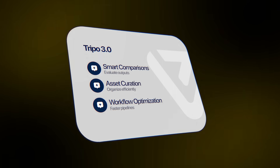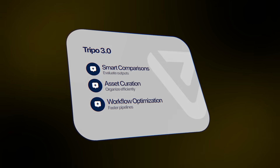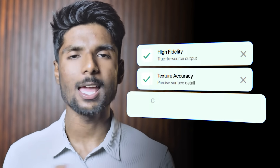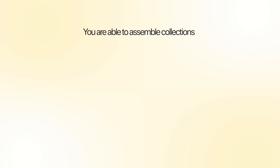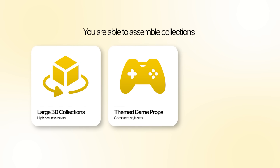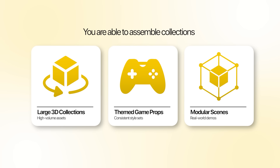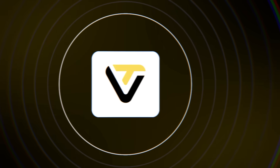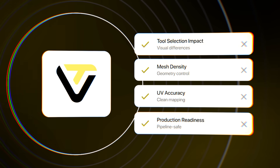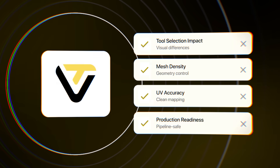Trypo version 3.0 also offers strong opportunities for comparisons, asset curation, and workflow optimization for creators focused on reviewing and analyzing AI-powered 3D tools. Considering its competitive performance against other AI 3D tools, important aspects include fidelity, texture accuracy, and overall generation speed. You are able to assemble large collections of 3D content such as game props or modular scenes, and demonstrate how various prompts influence scene construction or how Trypo handles various 3D assets, including the effect on mesh density, UV accuracy, and production readiness.